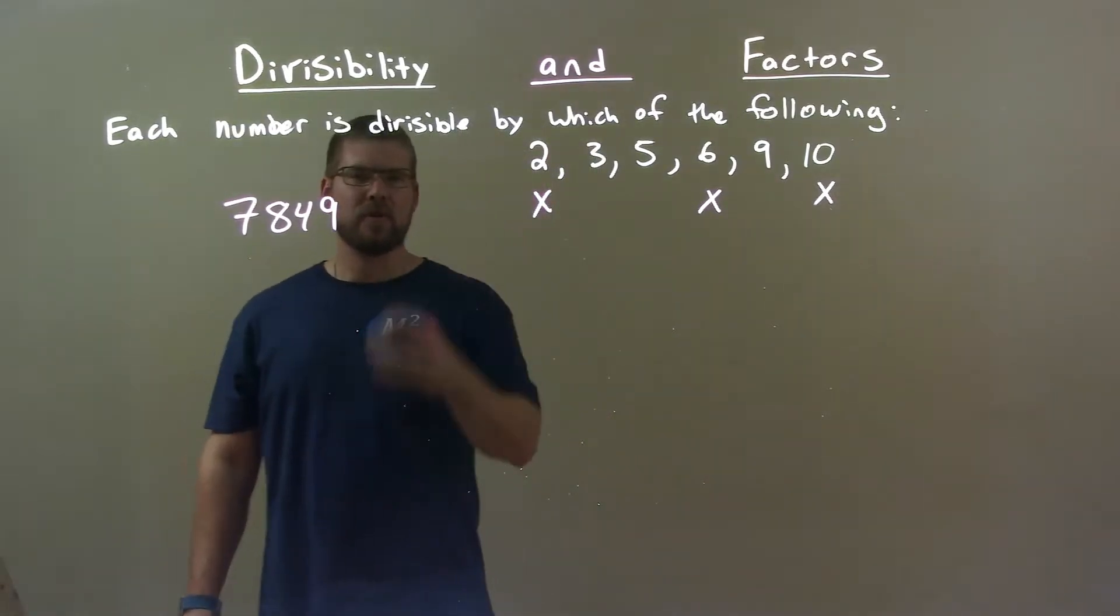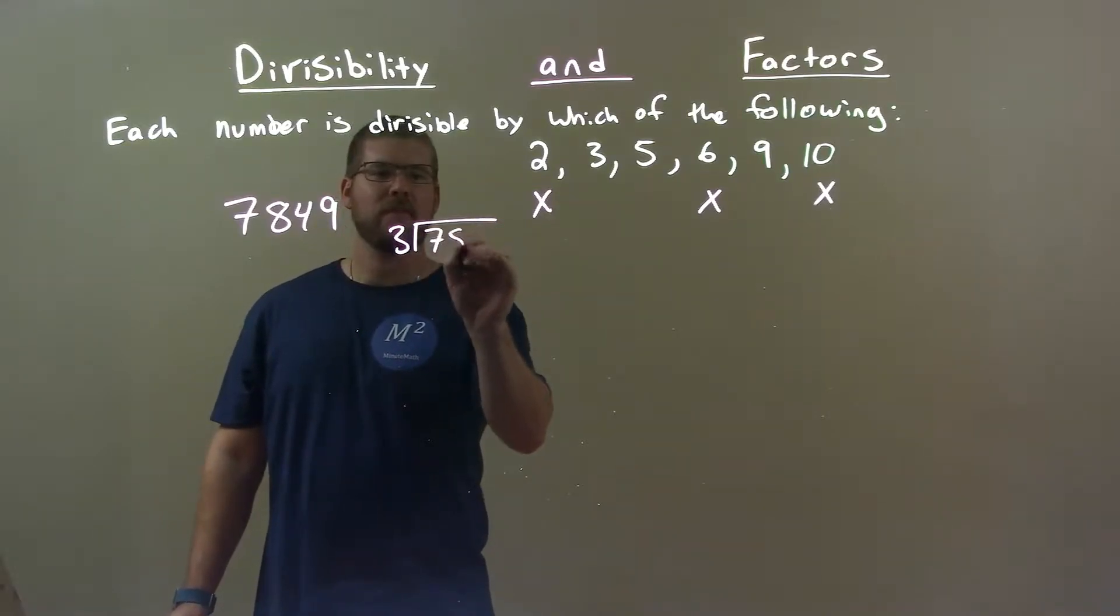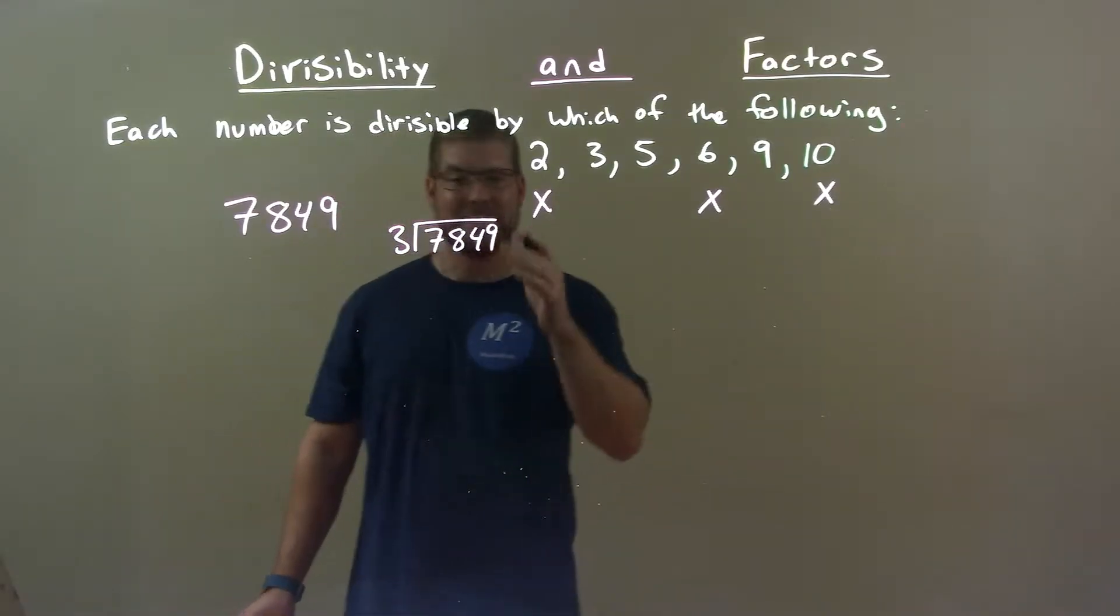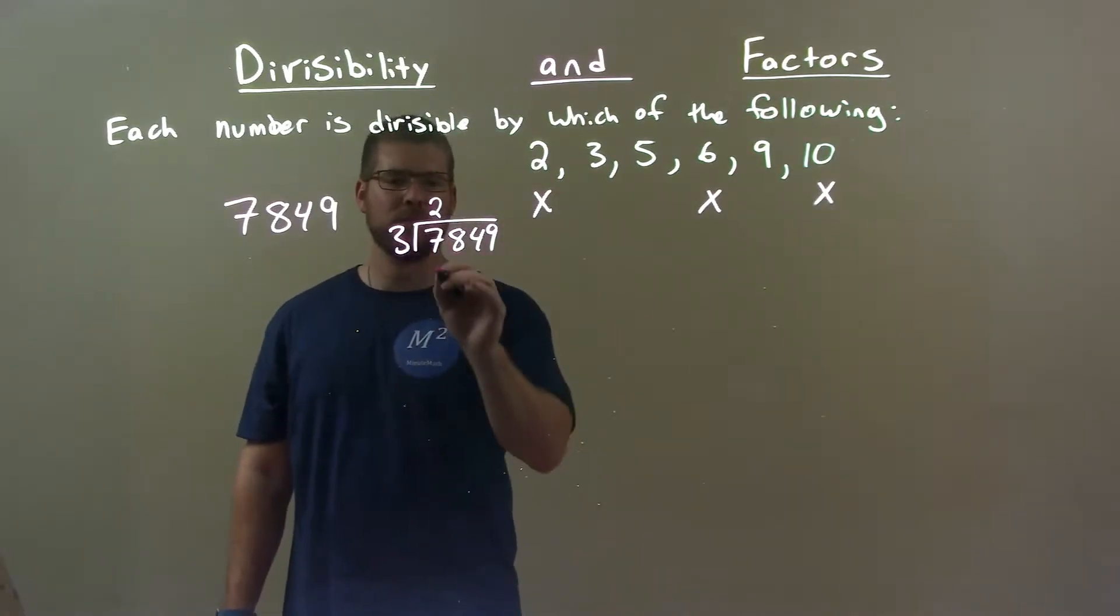Well, 3, let's do some long division. Does 3 go into 7,849 evenly? Well, 3 goes into 7 two times because 2 times 3 is 6.